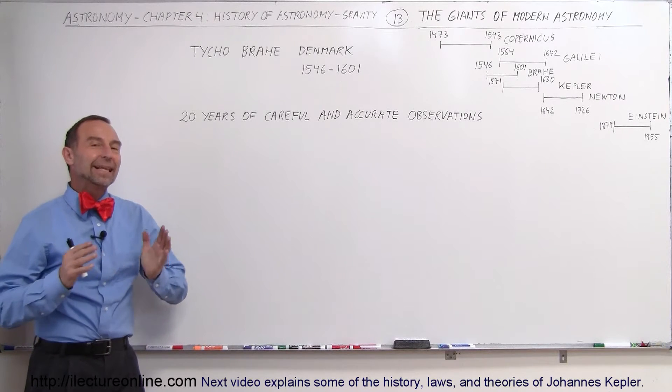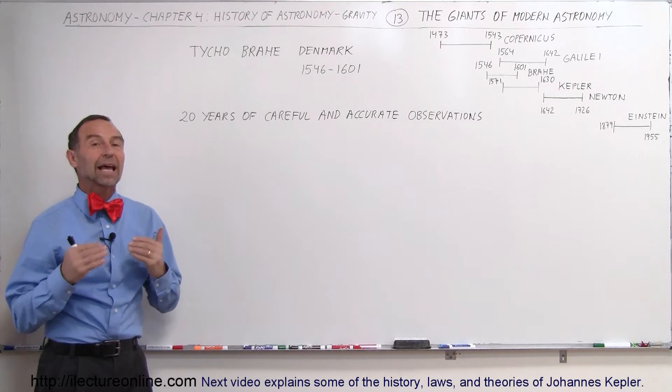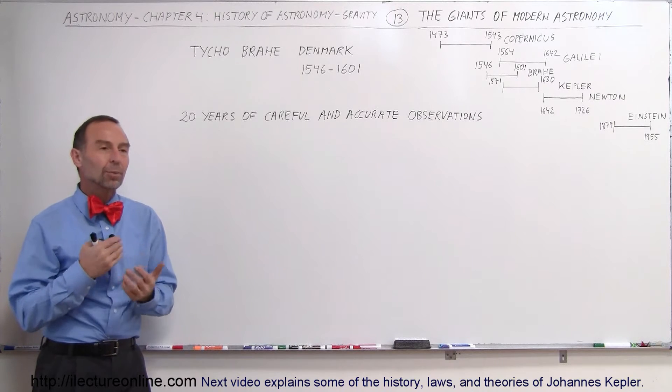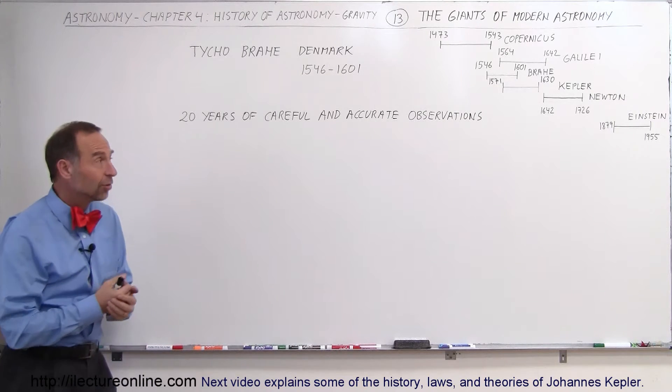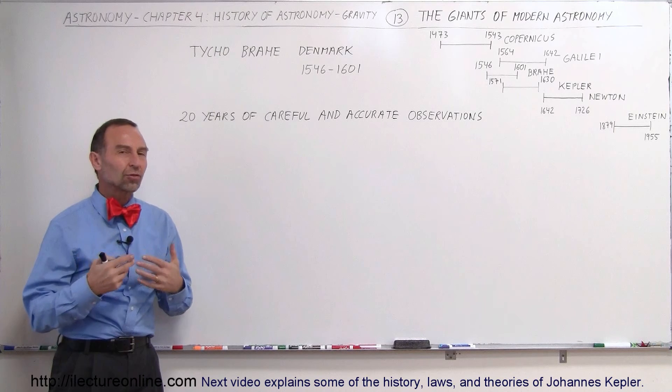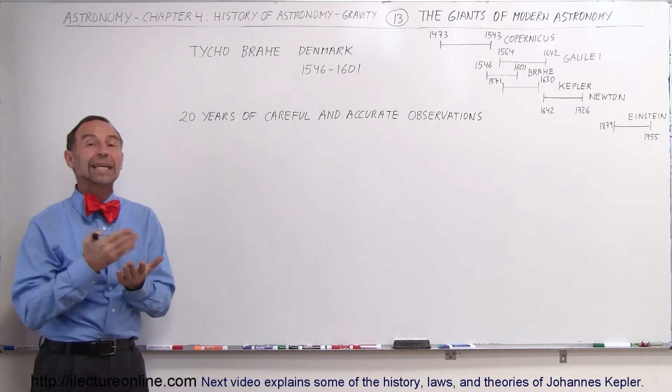Welcome to Electronline. The next giant in astronomy definitely has to be Tycho Brahe. Now Tycho Brahe lived in Denmark and he was a very smart scientist, strong in mathematics, strong in scientific method, and he worked for the king of Denmark.